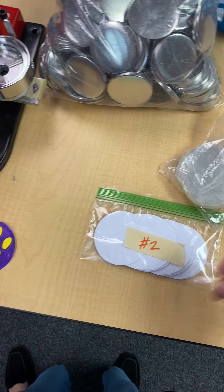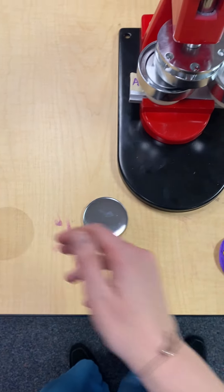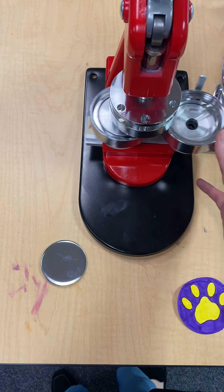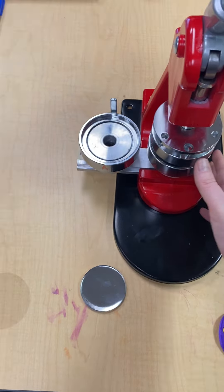Then you're gonna go over to bag number two, and this is where you're going to decorate what you want your button to look like. And then we're gonna grab one of these clear strips from bag number three. They are all nice and labeled for you.